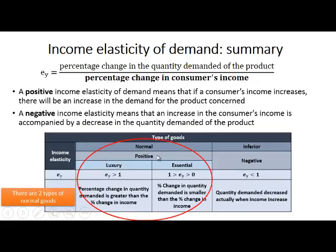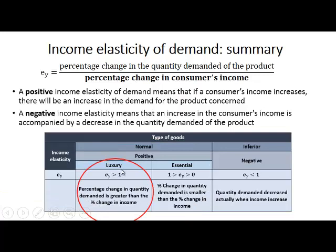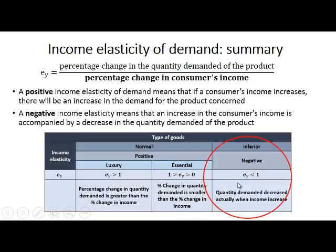There are two types of normal goods, for which income elasticity will be positive. For luxury goods, income elasticity will be larger than one, because the percentage change in the quantity demanded is greater than the percentage change in income. For essential goods, the income elasticity will be larger than zero but smaller than one, because the change in quantity demanded is smaller than the percentage change in income but both are positive. The income elasticity of inferior goods will be negative — smaller than zero — because the quantity demanded decreases when income increases.